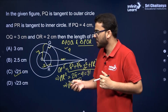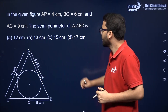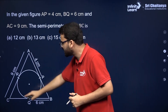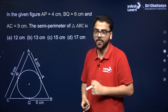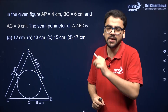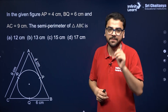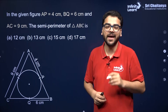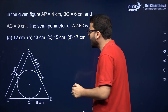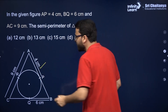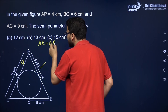In the given figure, you have to find the semi-perimeter of triangle ABC. Semi-perimeter means perimeter divided by 2. These are MCQ questions, but in a subjective exam you have to write everything in detail. AP equals 4 centimeters, so AR is also 4 centimeters, because the lengths of tangents drawn from an external point to a circle are equal.